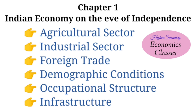Agriculture sector is a main topic. In this chapter, there are a few things in the agriculture sector. What are the reasons for the agriculture sector? Land settlement system, low level of technology, rural indebtedness, low agricultural productivity, use of limited chemical fertilizer, and inadequate irrigation facilities.